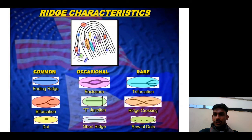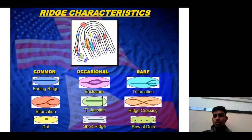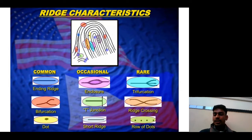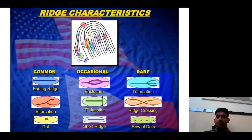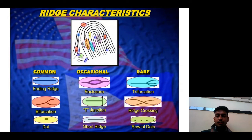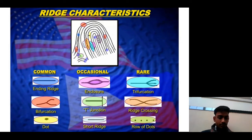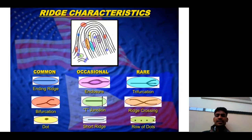The most common ridge characteristics are ending ridge and bifurcation. Occasional characteristics include enclosure, T-junction, and short ridge. Very rare characteristics include double bifurcation, ridge crossing, and row of dots. Ending ridge and bifurcation are found in approximately 90% of fingerprints.